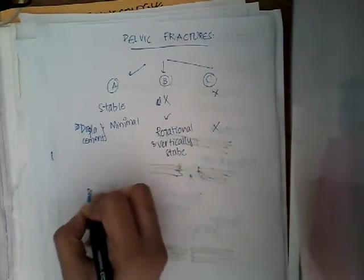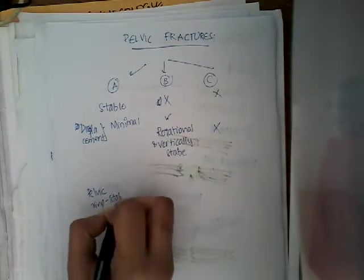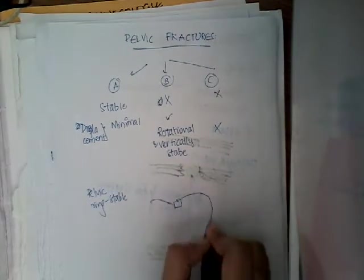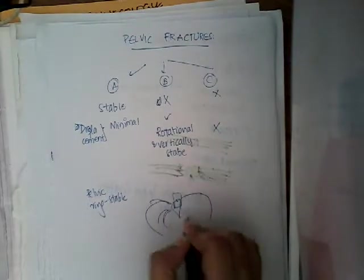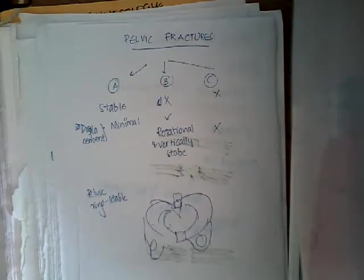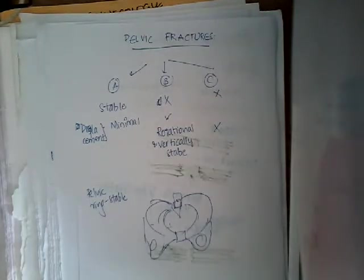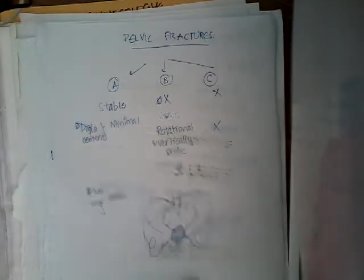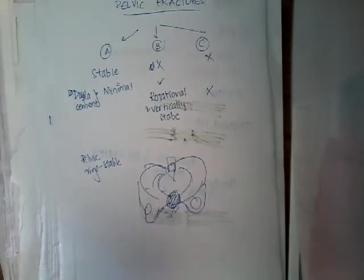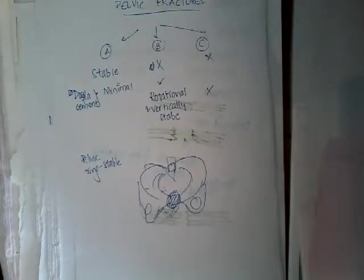In Type A, the pelvic ring is stable. In Type B, there is disruption of the pubic symphysis — this is called an open book injury, where the pubic symphysis is disrupted and opens up the pelvis. The pubic symphysis provides stability to the pelvis, so when it is disrupted, the pelvis opens up. In Type C, it is rotationally and vertically unstable.